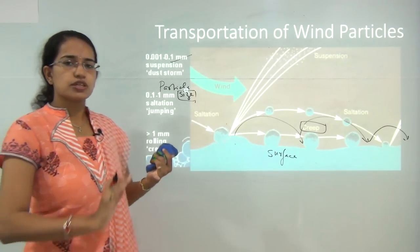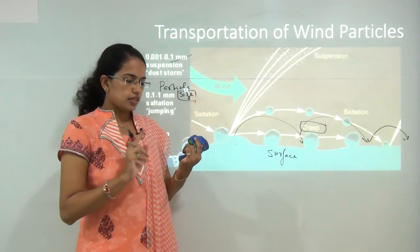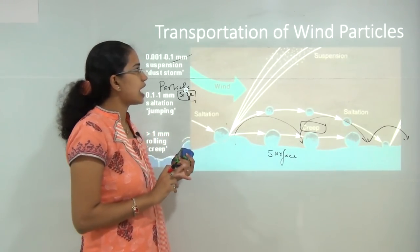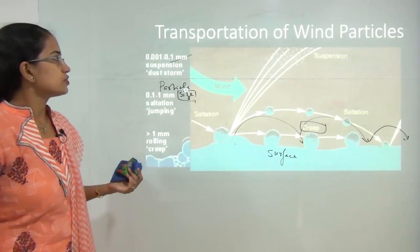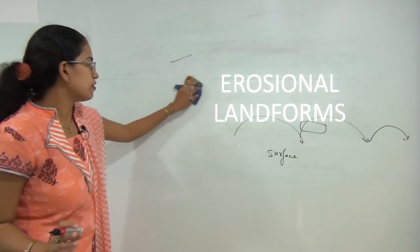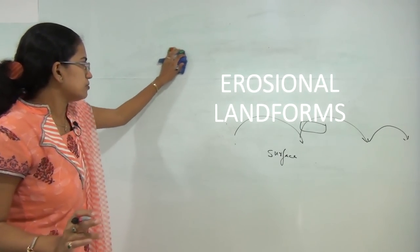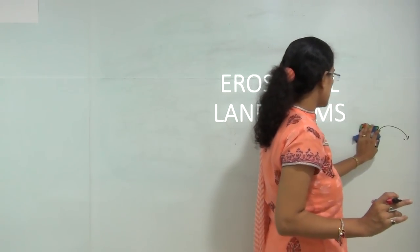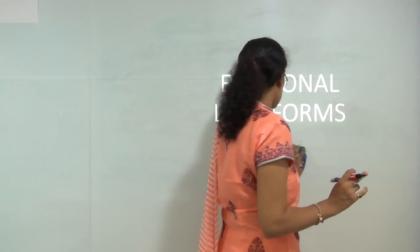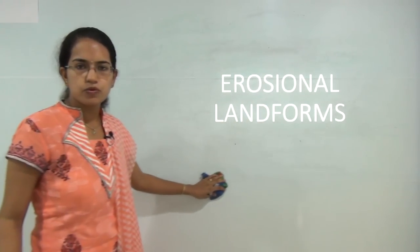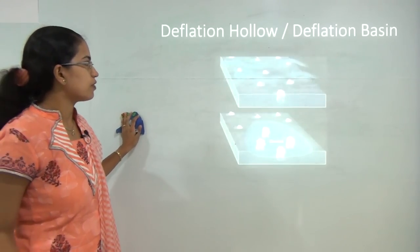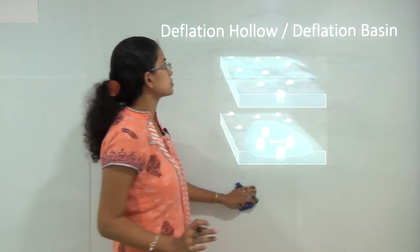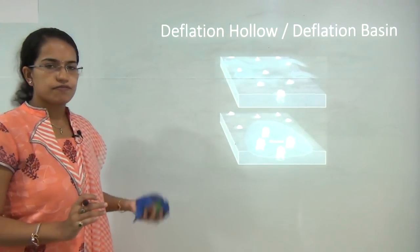Now that we have understood the various types of desert, the erosional factors affecting wind particles, and the transportation factors, we will start with the landforms. We will first classify the erosional landforms and then move on to depositional landforms. The first erosional landform is known as deflation hollows or deflation basin.